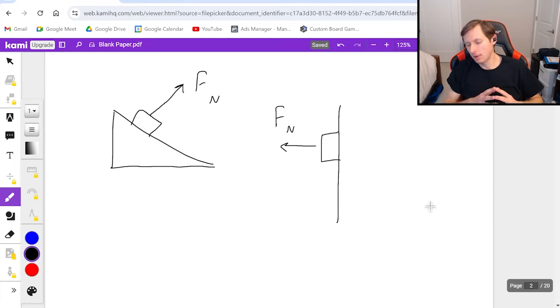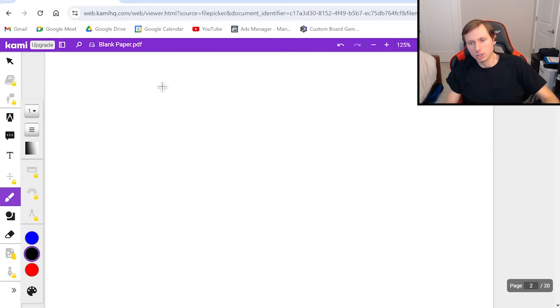We know which way it points now. And now the only thing we have left is to talk about the equation for the normal force. Here's the fun thing. There is no equation for normal force. Then how do we find it? So you're going to find the normal force, depending on the problem, using Newton's second law.